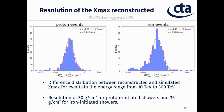Finally, we obtain the resolution of the shower maximum reconstruction for proton and iron events. The resolution is given by the standard deviation of the difference between the reconstructed and simulated Xmax. In both cases we have resolutions on the order of 30 g/cm² for proton and 35 g/cm² for iron events. We still have some events with bad reconstruction after the quality cuts that widen the distribution. We also have a small bias of about 2 g/cm² in each case, but in principle our distribution is almost centered at zero.